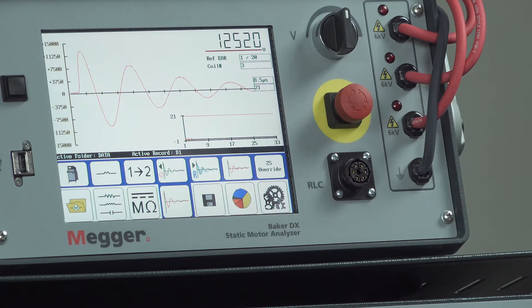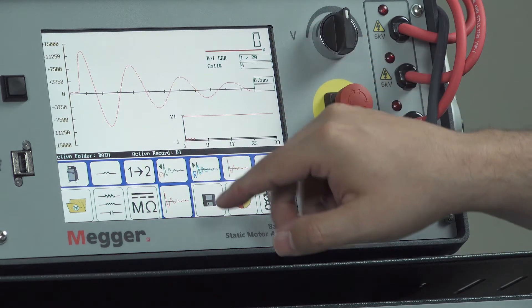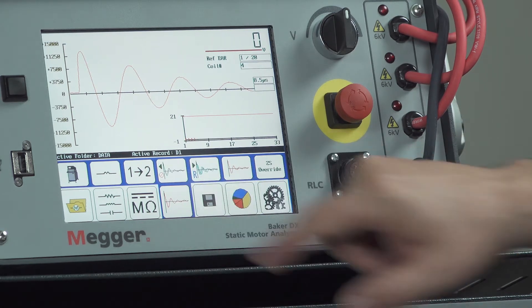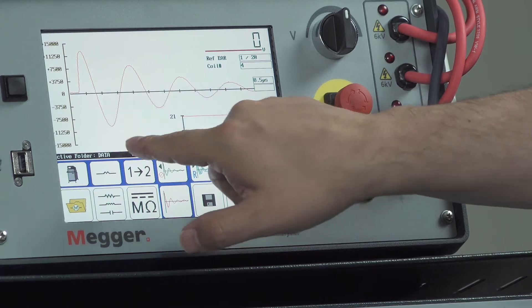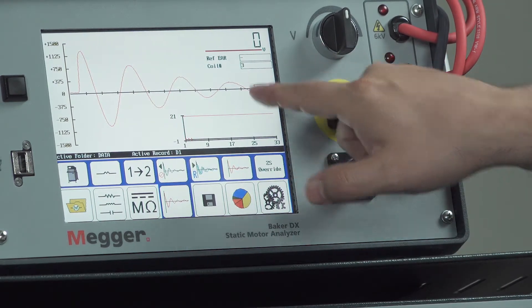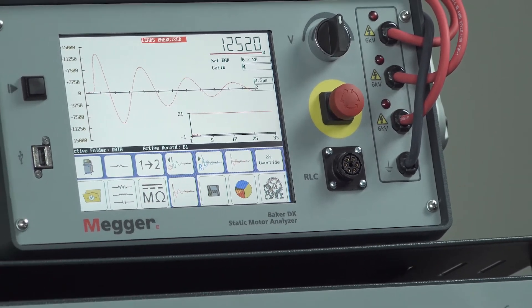If there's some problem or some error, maybe you start the test but then you don't completely initiate it, you want to back one up, you can select the delete last waveform button. And that will delete the last coil. And then you can repeat that coil. You can see now it's coil three again. Do the surge.